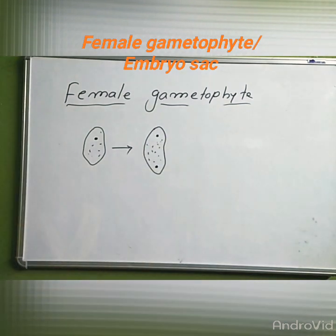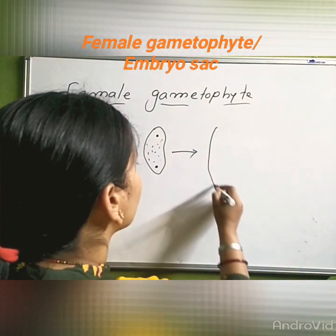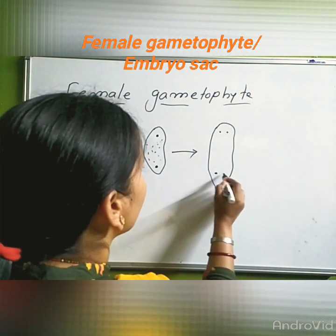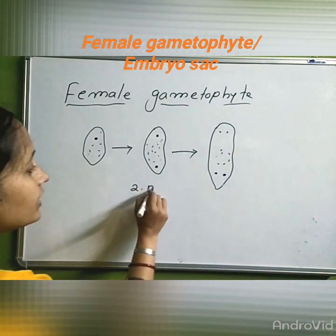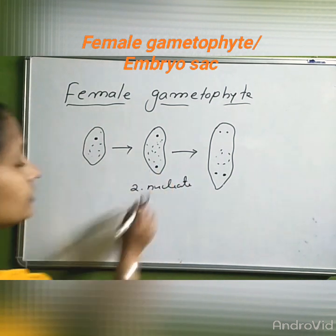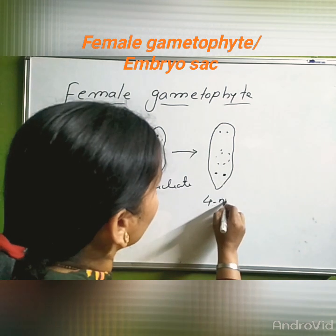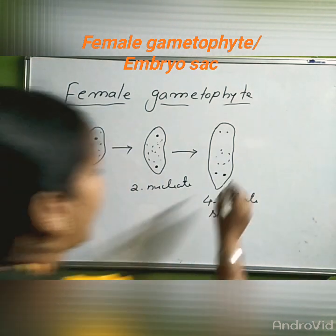In case of mitosis, the chromosome number remains the same, and from one mother cell we get two daughter cells. These two nuclei will again divide into two, and this is called the two-nucleate state. This structure is called the two-nucleate state, and this is called the four-nucleate state.